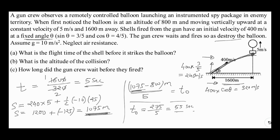The balloon reaches that height at 55 seconds, but the shell reaches that point 5 seconds after it is launched. So the shell must be fired 5 seconds before that, meaning the gun crew should fire at 55 − 5 = 50 seconds after first noticing the balloon. So after observing the balloon, we wait 50 seconds, fire the shell, and the shell reaches the balloon in 5 seconds to hit it at 1075 meters altitude.